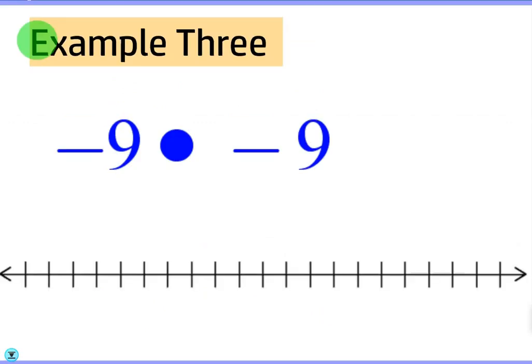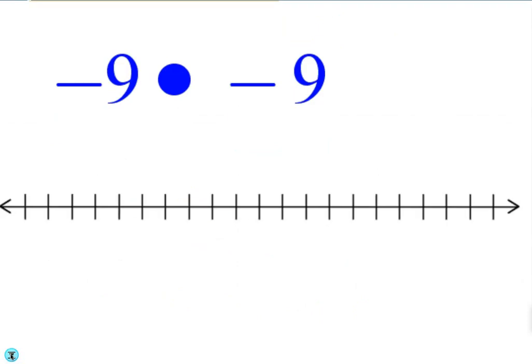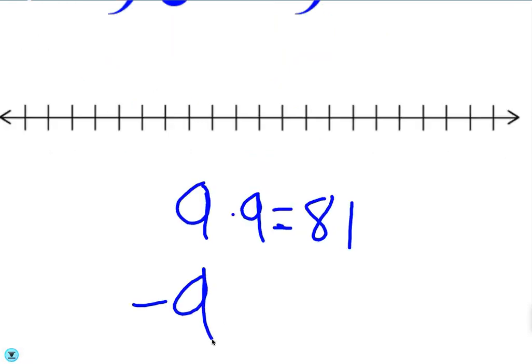Last example, negative 9 times negative 9. Okay, so we know that 9 times 9 is 81. So that must mean that negative 9 times negative 9 is positive 81.